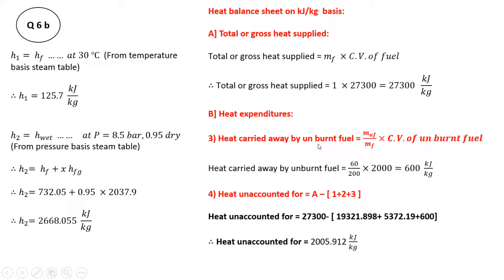The next part is heat carried away by the unburned fuel. Since the heat balance sheet is on a per kg basis, we divide mass of unburned fuel by mass of fuel: 60 divided by 200, multiplied by calorific value of unburned fuel 2000, giving 600 kJ per kg. The last part is heat unaccounted for, which equals total heat supplied minus the first, second, and third parts already calculated: 27300 minus 19321.898 minus 5372.19 minus 600, giving unaccounted heat of 2005.912 kJ per kg.